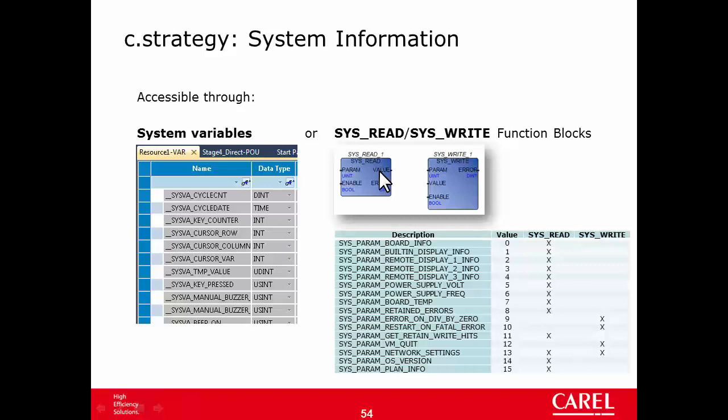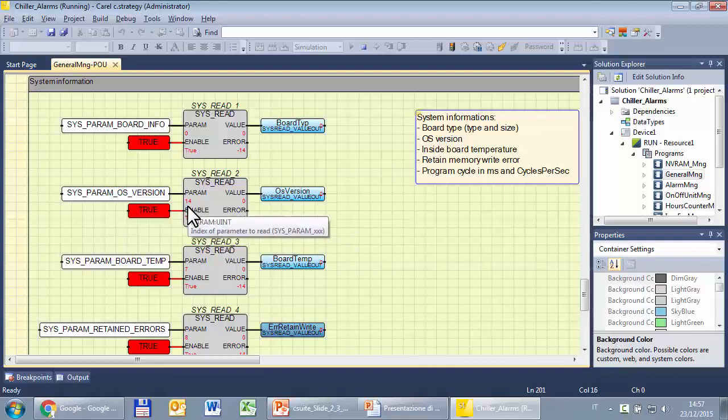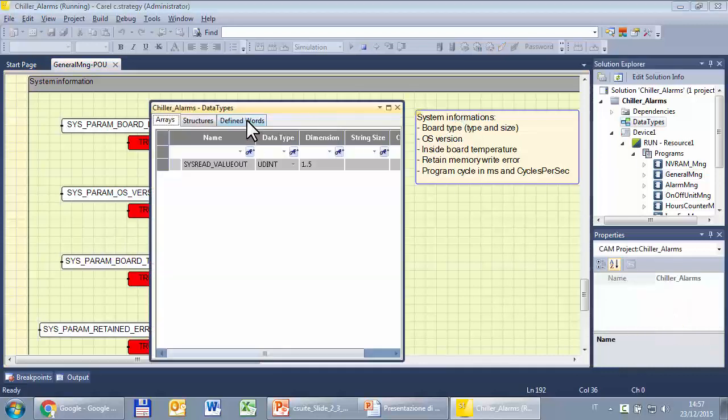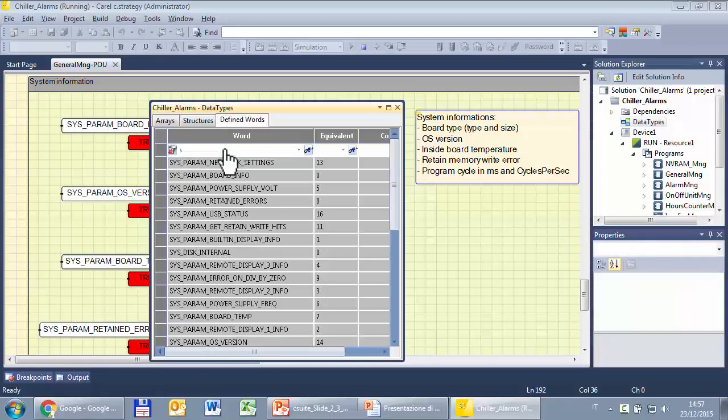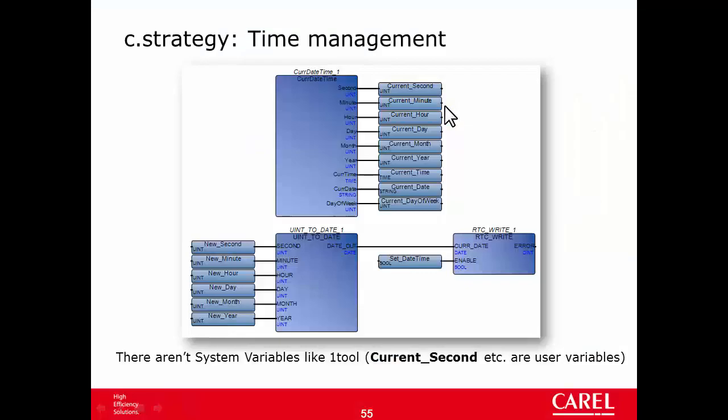Now I show you an example. This is a project based on the project template. Here are some sysread function blocks reading some sys information. One of them is the operating system version, parameter 14. You can see that this project doesn't use constants here but uses defined words like this. For example, the sysparamOS version is 14.